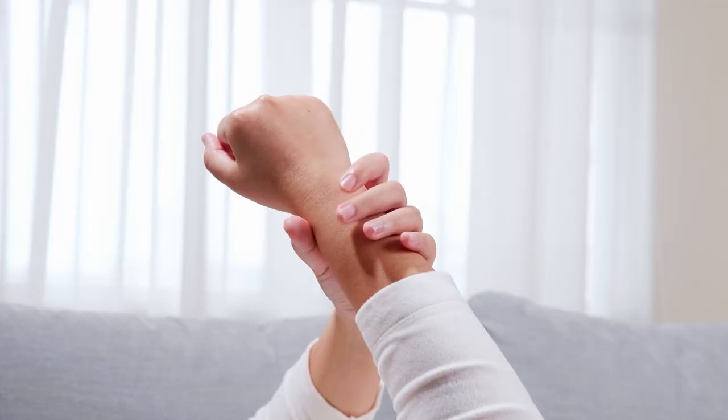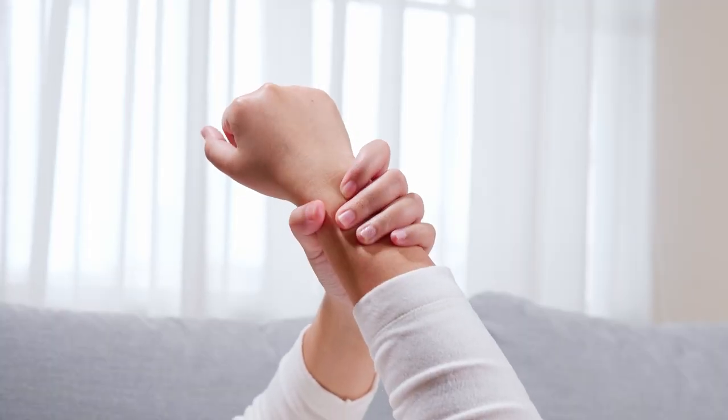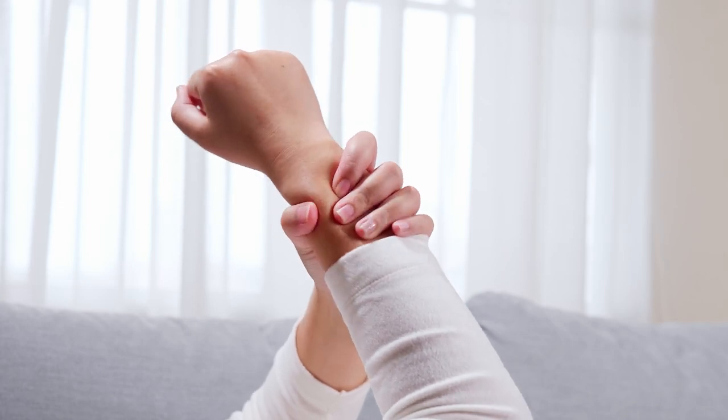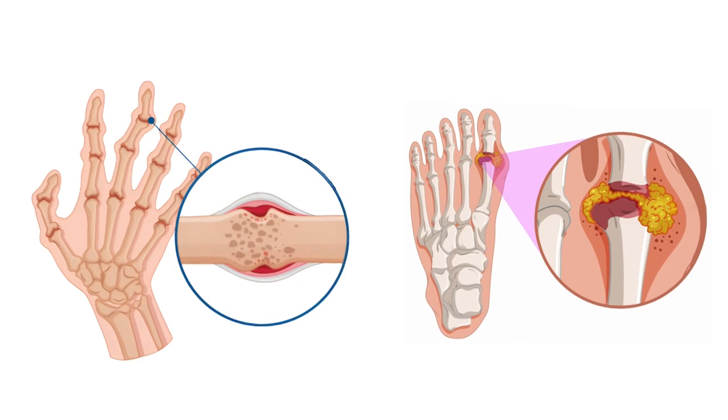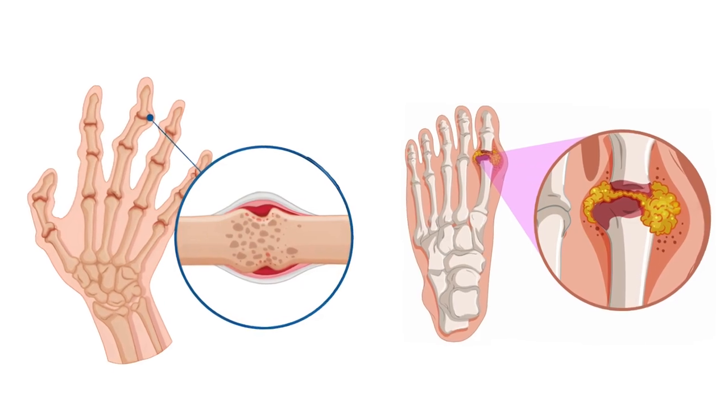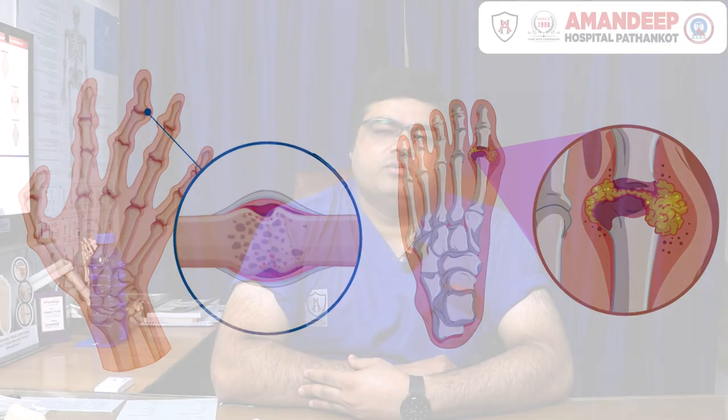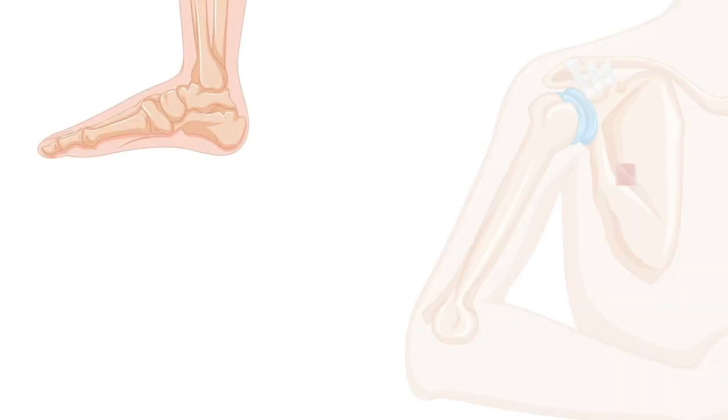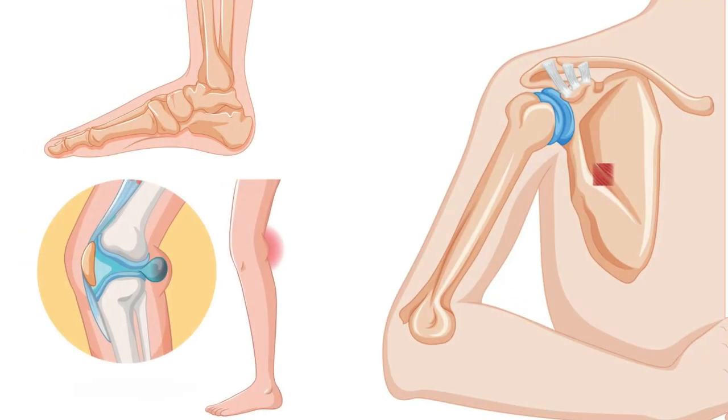Other symptoms include swelling in the joints and sometimes redness. In the advanced stages of rheumatoid arthritis, the patient may develop joint deformities. The joints most commonly involved are those of both hands and feet, but other joints such as the knee, shoulder, and ankle can also be affected.